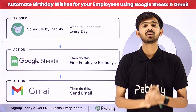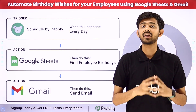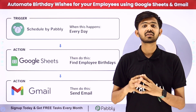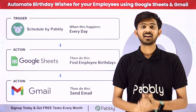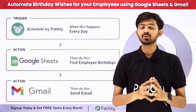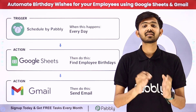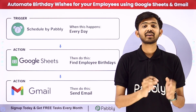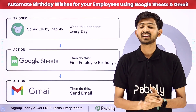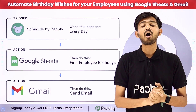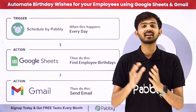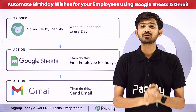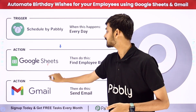For that, I'm going to first schedule this workflow for every day, and for scheduling this workflow I'm going to use Schedule by Pabbly. After scheduling this workflow, I'm going to get the current date and find it as a birthday in my Google Sheet where I have the data of all my employees. Whenever I find birthdays matching the current date, I'll automatically send an email to that employee with birthday wishes. For that, I need to build a simple connection between Google Sheets and Gmail.